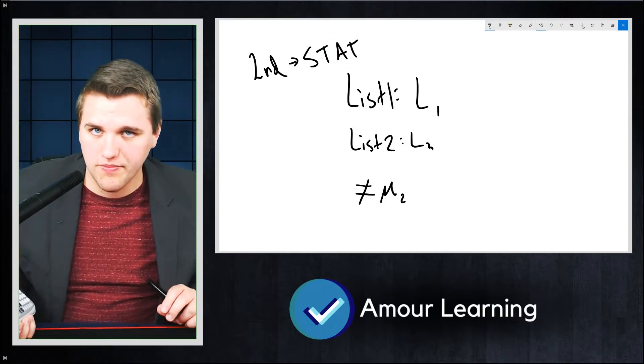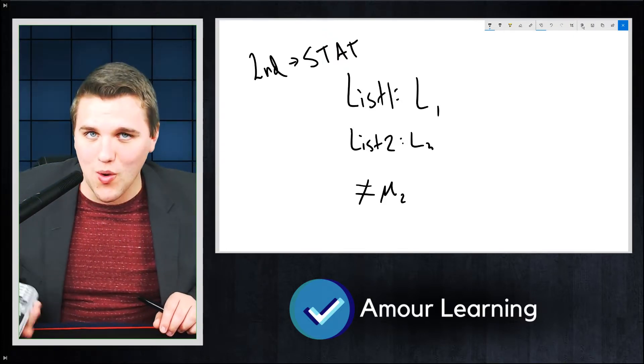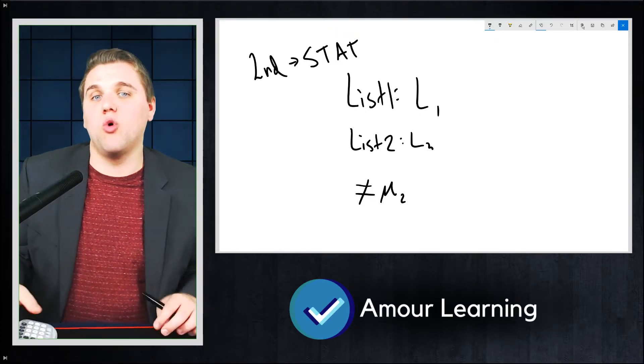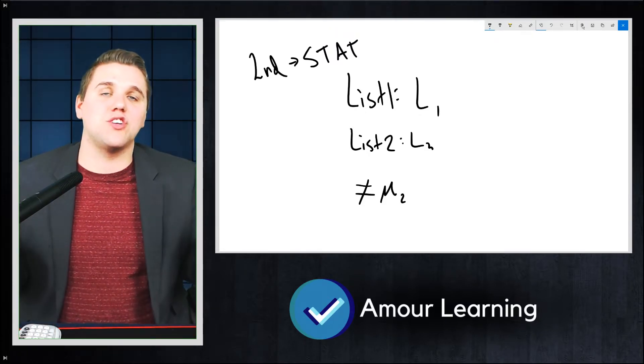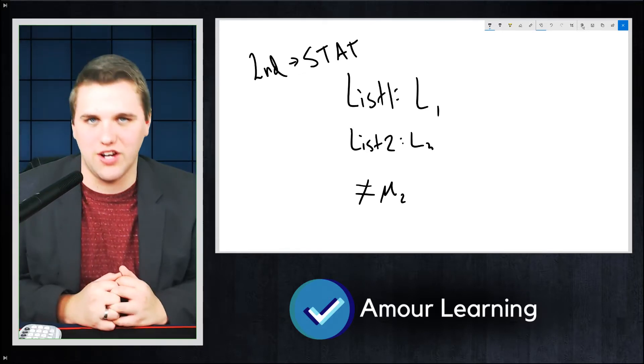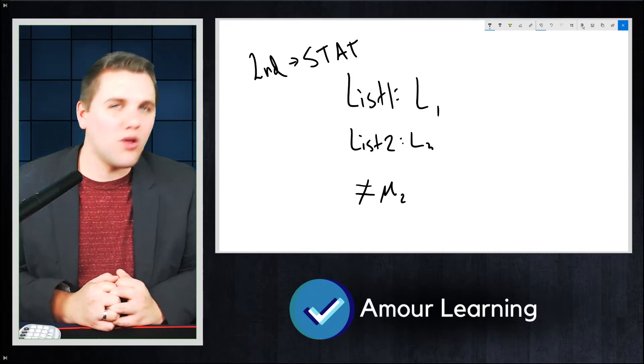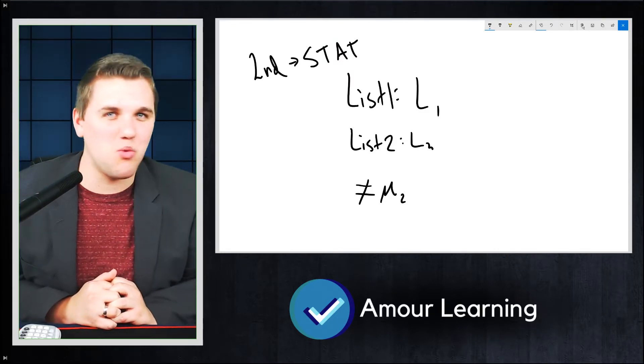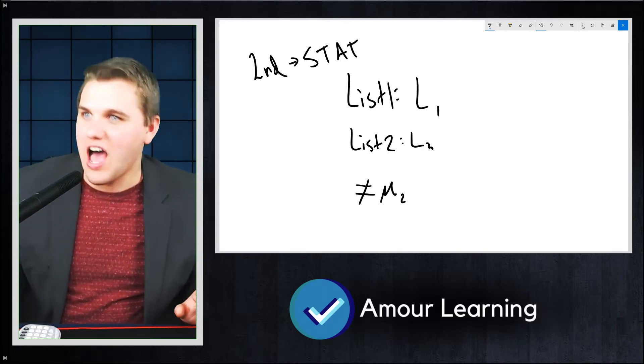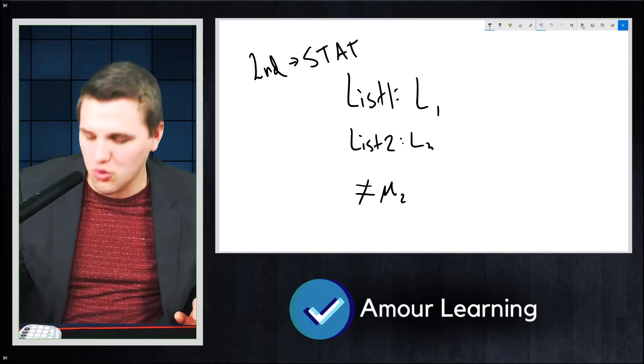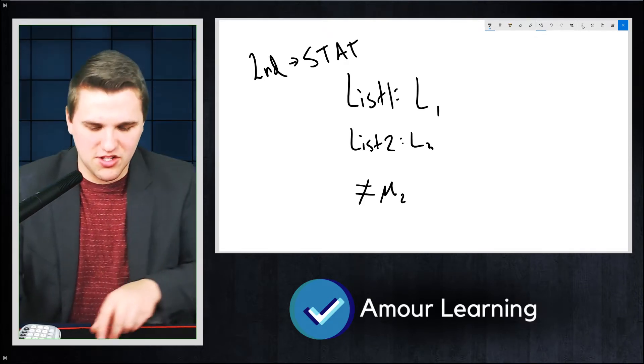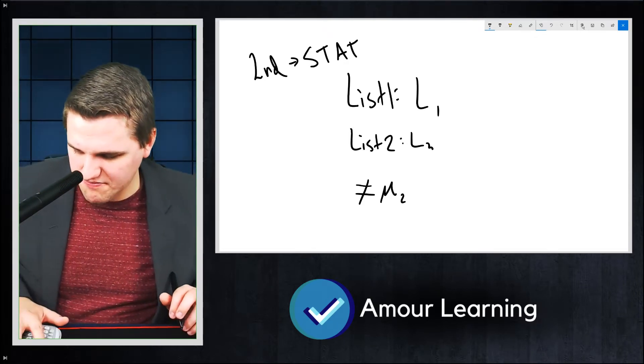And for pooled, always, always, always pick no for pooled. The reason is pooled takes the standard deviation of both groups and combines them to make a new standard deviation. I don't like this. I don't see why you would ever want to use this. Just don't use it. I guess if you're taking from the same population, I guess you could use pooled. I don't like using pooled though. Just not my thing. So for that reason, just hit no.